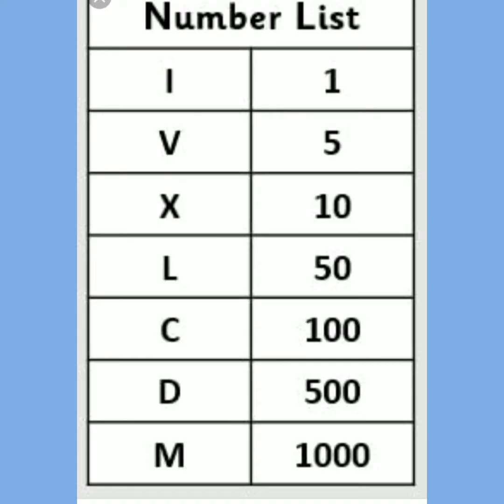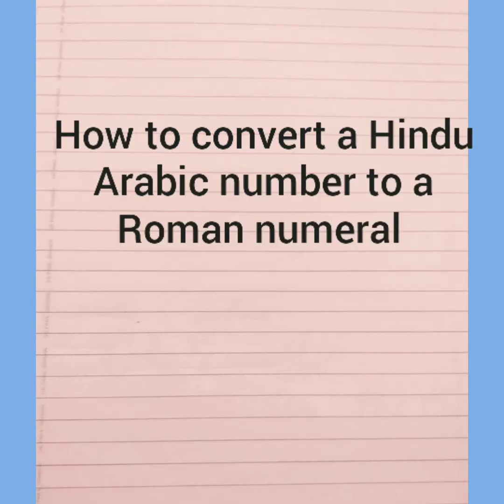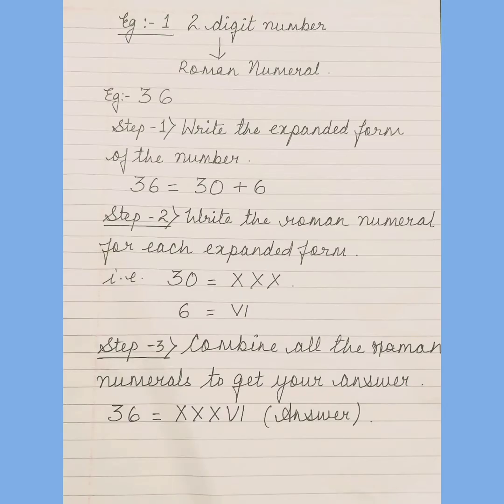Here you can see the number list that is the basis of converting Roman numerals to Hindu-Arabic and vice versa. In this slide you can see 101 is an Arabic number and the Roman numeral form of 101 is CI. This is how we have to convert the Arabic number into the Roman numeral. In this video we are going to learn about how to convert a Hindu-Arabic number into a Roman numeral. Let's start.